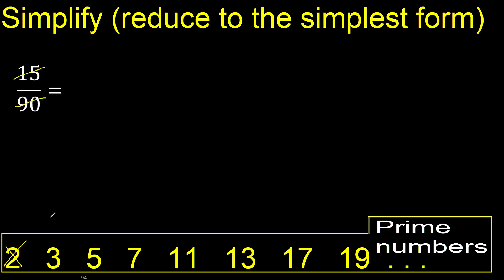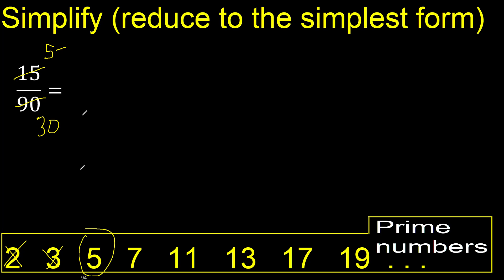90 can also be divided by 3. So, divided by 3: 15 divided by 3 is 5, and 90 divided by 3 is 30. Now, 5 cannot be divided by 3, so we move on.